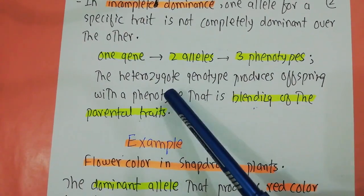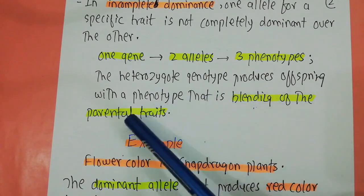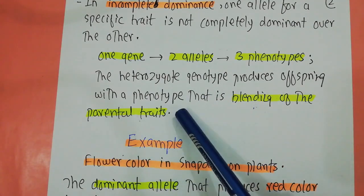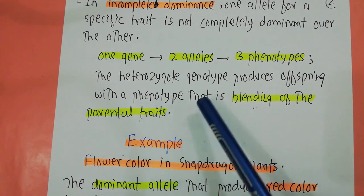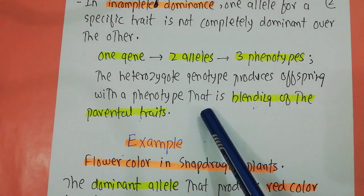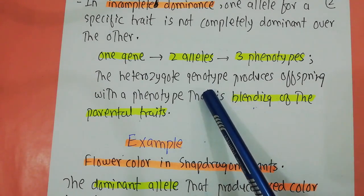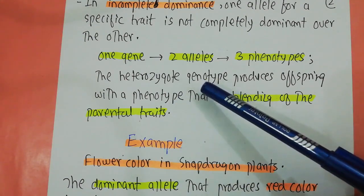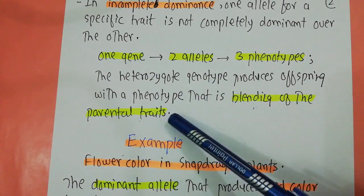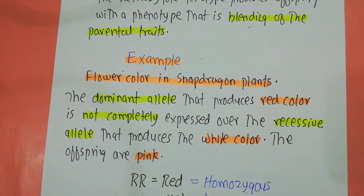The reason is that the heterozygous genotype produces an offspring with a phenotype that is actually a blending of the parental traits. In the heterozygous condition, you get an offspring with a phenotype different from both parents — it is a blend of the parental traits. Let me give you an example of incomplete dominance.